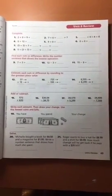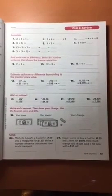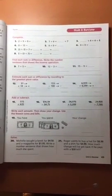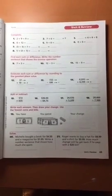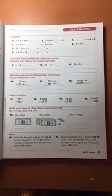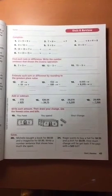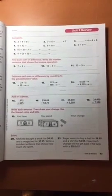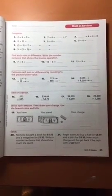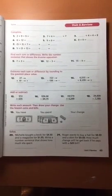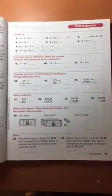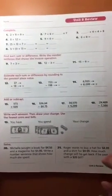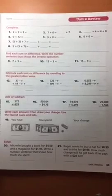Instead of giving a child who is working below grade level a different sheet altogether, you can give them the same sheet as the rest of the class and have them do some alternate activities. This saves you some time in terms of photocopying or doing an entire new sheet altogether.